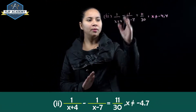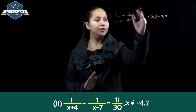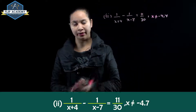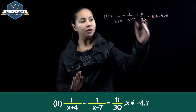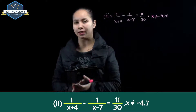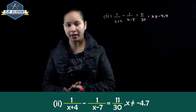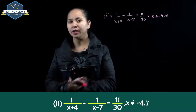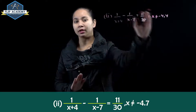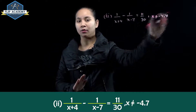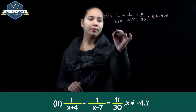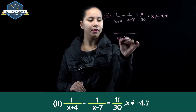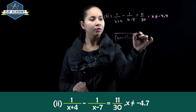Now for the second part: 1 upon x plus 4 minus 1 upon x minus 7 equals 11 upon 30, where x doesn't equal to minus 4 or 7. If we substitute those values, the polynomial would be undefined because the denominator cannot be zero.